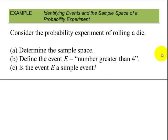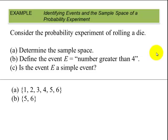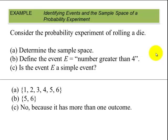Consider the probability experiment of rolling a die. Part A: determine the sample space. The sample space would be the numbers 1 through 6, since there are 6 faces on the die numbered 1 through 6. Part B: define event E as a number greater than 4 — that would be 5 and 6. This is not a simple event because it has more than one outcome.